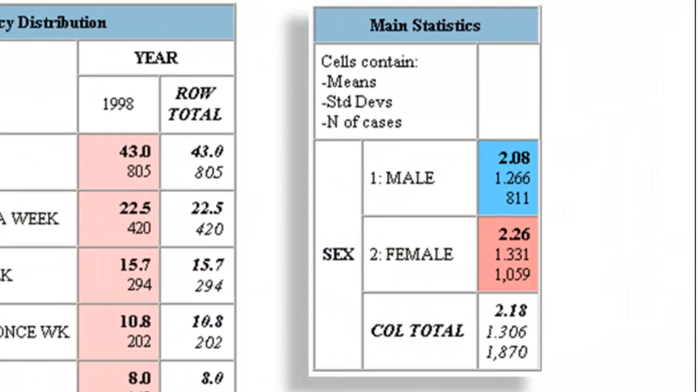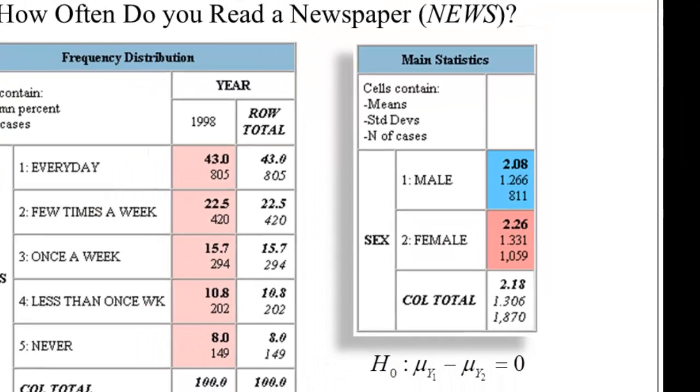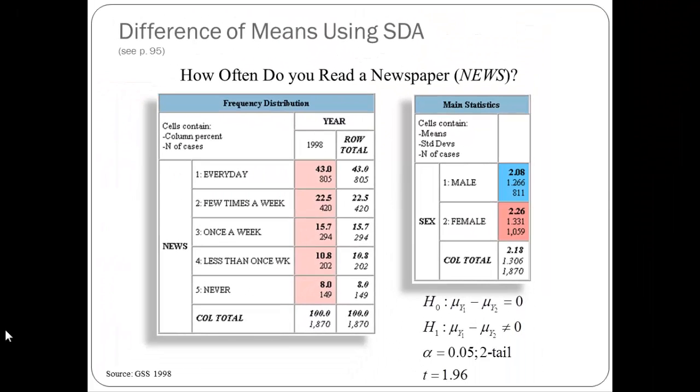On the right-hand side I've generated using SDA the means, standard deviations, and number of cases for how frequently people read the newspaper by gender. You can see the average for men is 2.08 and the average for women is 2.26. This means that men read the newspaper on average more frequently than women, and we're interested in whether this difference is statistically significant.